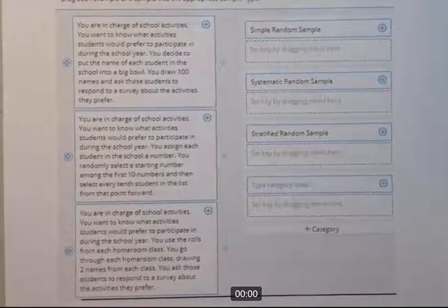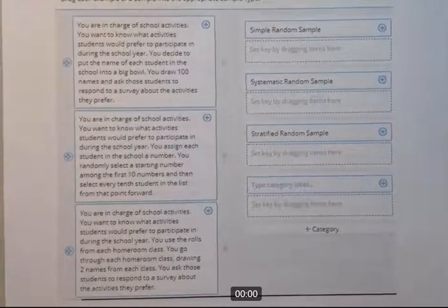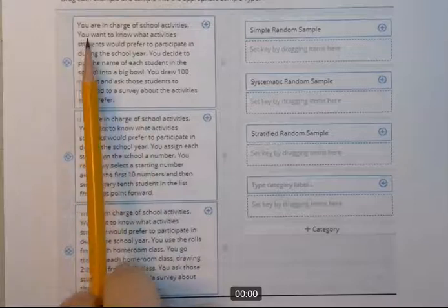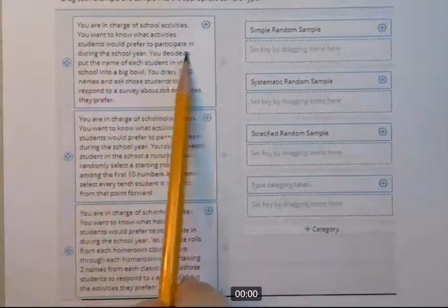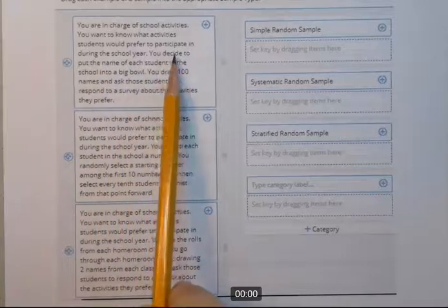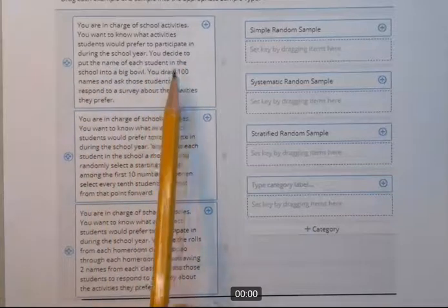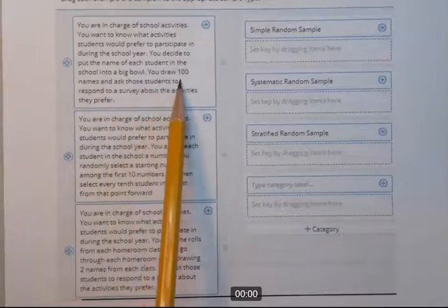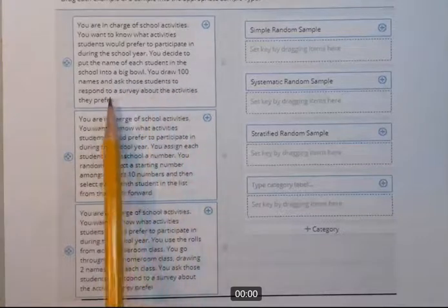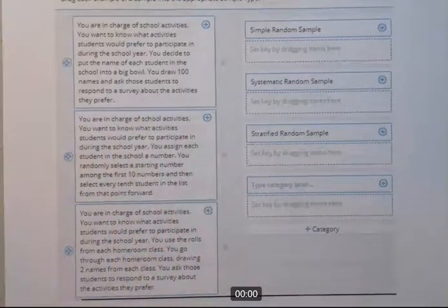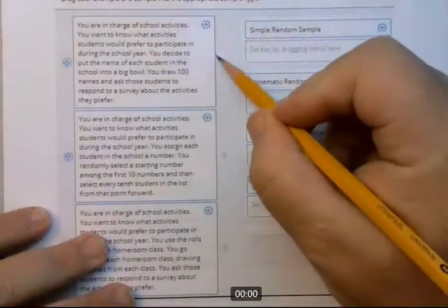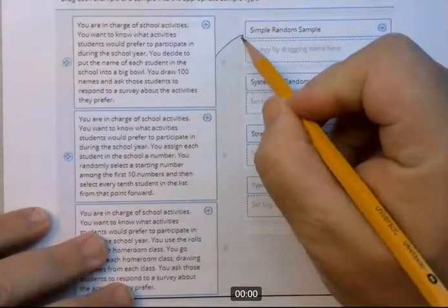So this is a simple matching here. So let's read the first one. You're in charge of school activities. You want to know what activities students would prefer to participate in during the school year. You decide to put the name of each student in the school into a big bowl. You draw 100 names and ask those students to respond to a survey about the activities they prefer. So that's just simply a simple random survey, just randomly picking students out of a hat. So that would be this one right here.